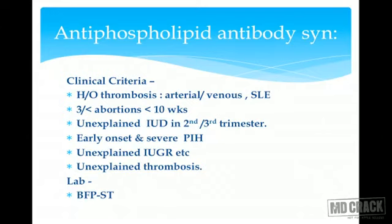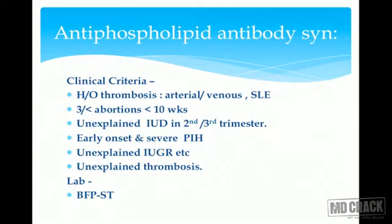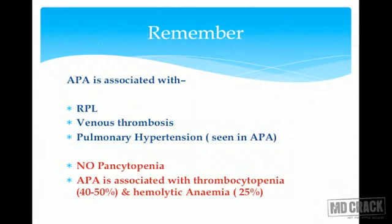Clinical criteria for suspecting APS: clear history of thromboembolic events (arterial or venous); SLE; three or more abortions before 10 weeks; unexplained fetal loss in second or third trimester; early onset severe PIH (even before 24 weeks); unexplained IUGR; unexplained thrombosis; and biologically false positive syphilis test — all point toward antiphospholipid antibody syndrome.